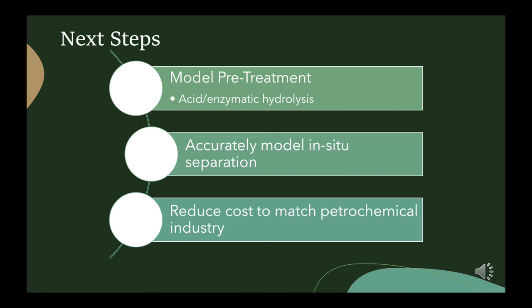It would also be beneficial to find a better way to model the bioreactor, since what we ended up doing was a stoichiometric reaction, which isn't a perfect approximation for bioreactor growth. Lastly, it would be very beneficial to find a way to reduce the costs of this process so that it could match the petrochemical industry and drive us further towards a sustainable and economic future — one where we are using renewable energy sources such as biobutanol while still meeting the power needs of current society.